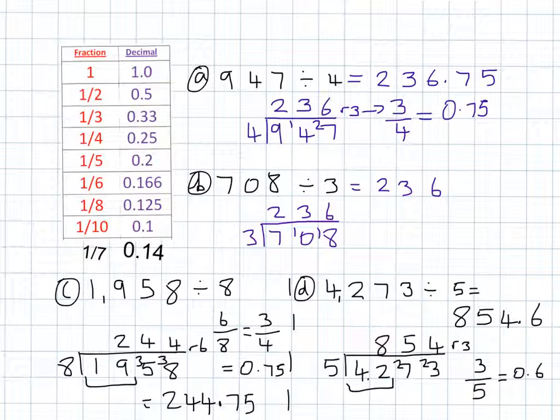Here are your answers. Let's briefly go through them. 947 divided by 4 is 236 with a remainder of 3. So that means it's three quarters. And you should know straight away, you can use the chart, that one quarter is 0.25. So three quarters is worth 0.75. So the final answer is 236.75.